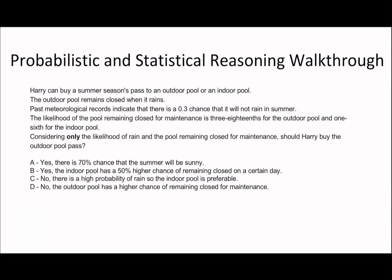So let's move on to the next question. Considering only the likelihood of rain and the pool remaining closed for maintenance, should Harry buy the outdoor pool pass? So if you read to the top, it says he could buy summer season pass to an outdoor pool or an indoor pool. The outdoor pool remains closed when it rains. Past records indicate there's a 0.3 chance it will not rain. So the chance of rain is going to be 0.7. See, this is, it doesn't tell you this explicitly, but the rain isn't going to affect the indoor pool. That's why it's not mentioned in the rest of the question. And here you can see, as I'm reading, it says the likelihood of the pool remaining closed for maintenance is 3/18 for the outdoor pool and 1/6 for the indoor pool. I can see those are both equivalent fractions. So I don't even need to fill that in because I know maintenance can't have an effect on my answer, if that makes sense. So therefore, I'm going to rule out D immediately. And therefore, I know the only thing I need to consider is the rain here.